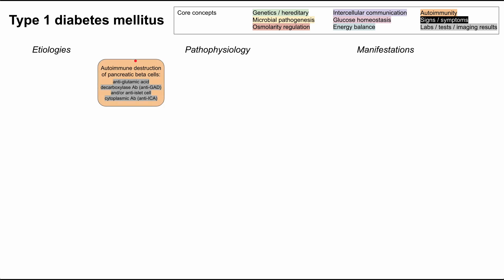Let's start with the central cause or the central mechanism of type 1 diabetes mellitus — that's autoimmune destruction of the pancreatic beta cells. There are two antibodies in particular: anti-glutamic acid decarboxylase antibody, or anti-GAD, and anti-islet cell cytoplasmic antibody, anti-ICA. Both of these can come up on a blood test.